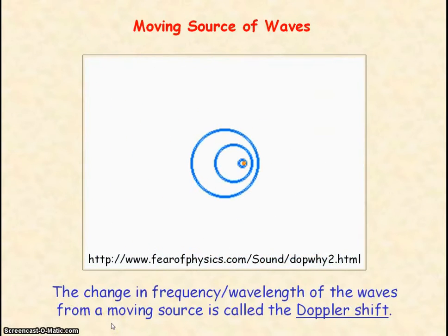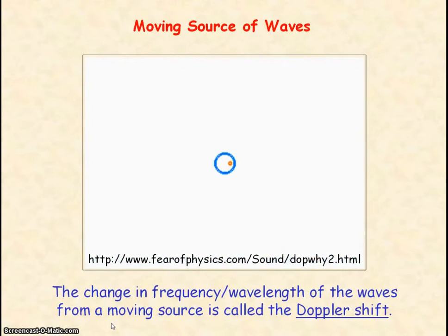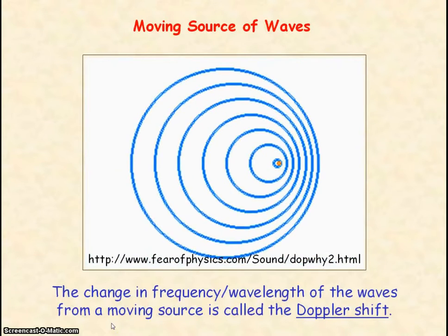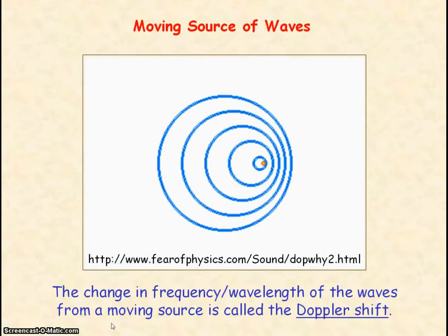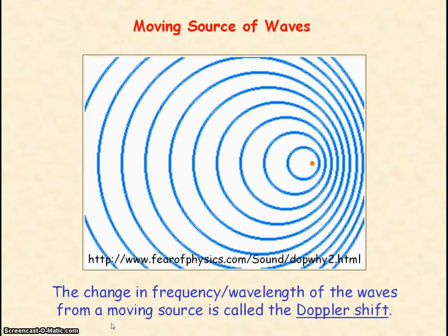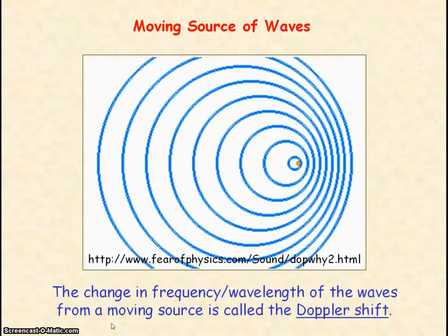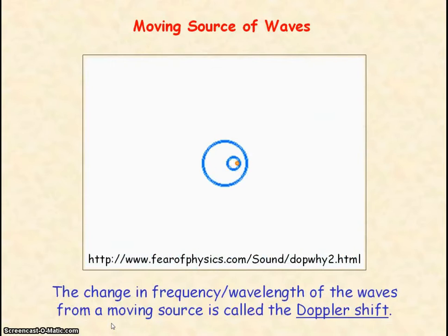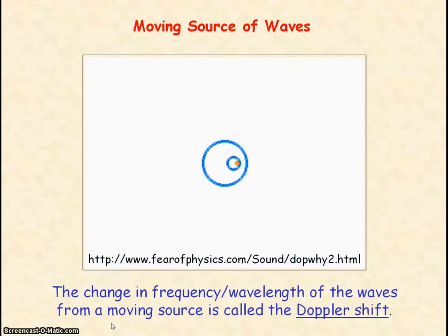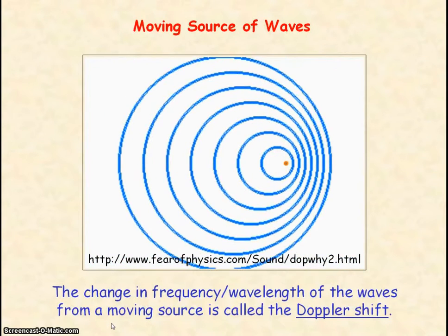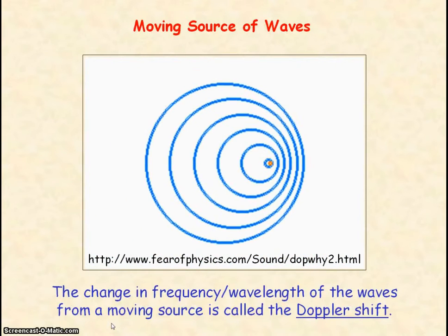This change in frequency or wavelength of the waves due to the relative motion between the source and an observer is called a Doppler shift. A familiar example is the siren of a police car — when the police car is moving towards you, you hear a high pitch, high frequency, but when it's moving away from you, you hear a low pitch, low frequency. You're able to detect the change in pitch as the car moves towards you and then away from you.